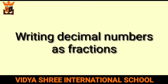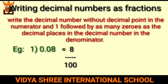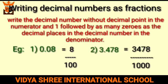Writing decimal numbers as fractions: write the decimal number without the decimal point in the numerator, and place 1 followed by as many zeros as there are decimal places in the denominator. For example, 0.08 can be written as 8 upon 100, and 3.478 can be written as 3478 by 1000.